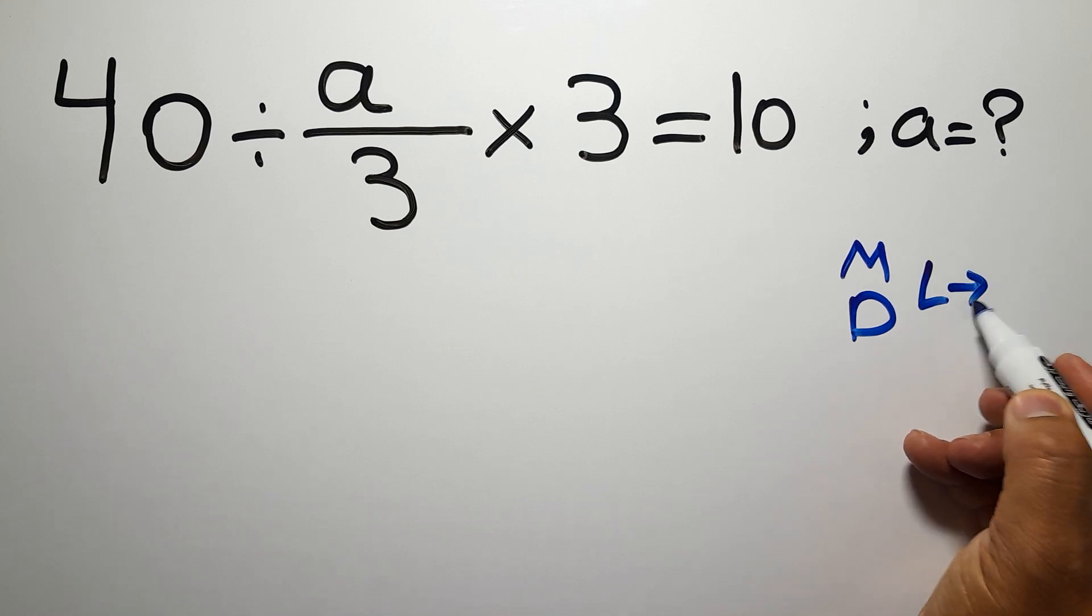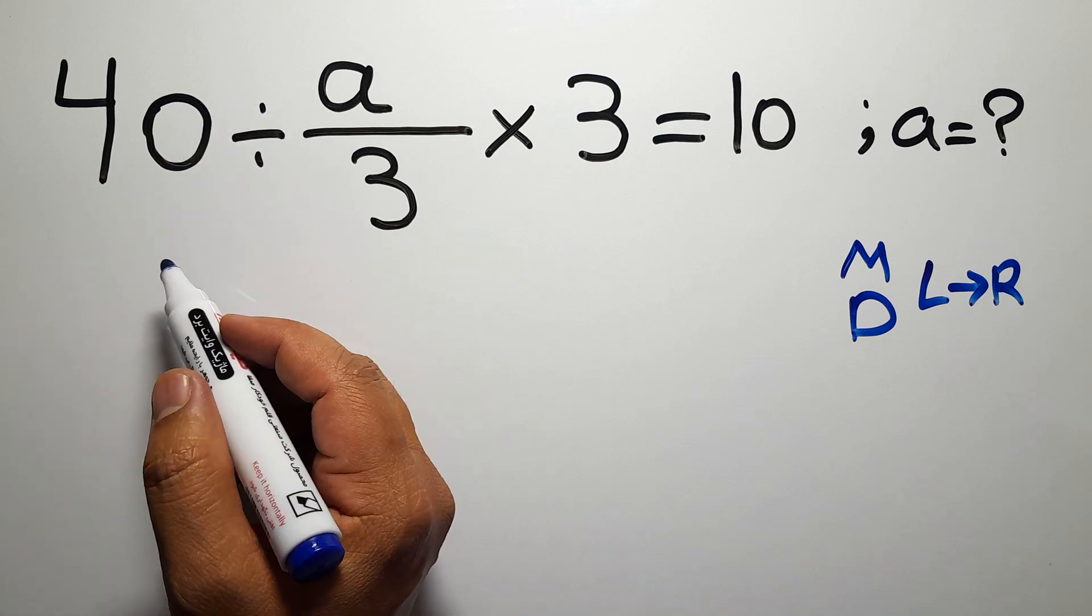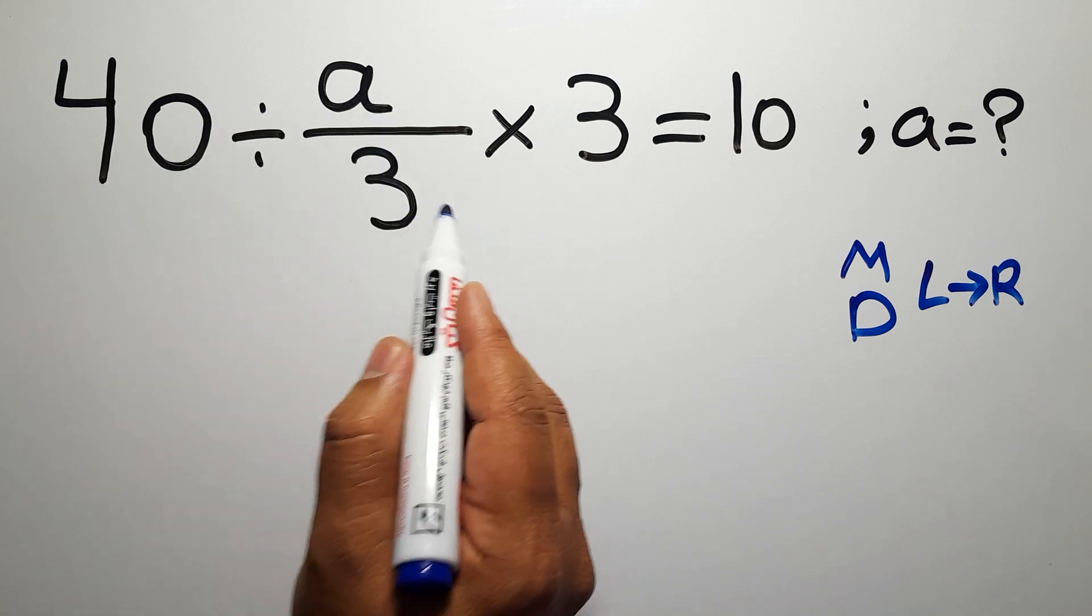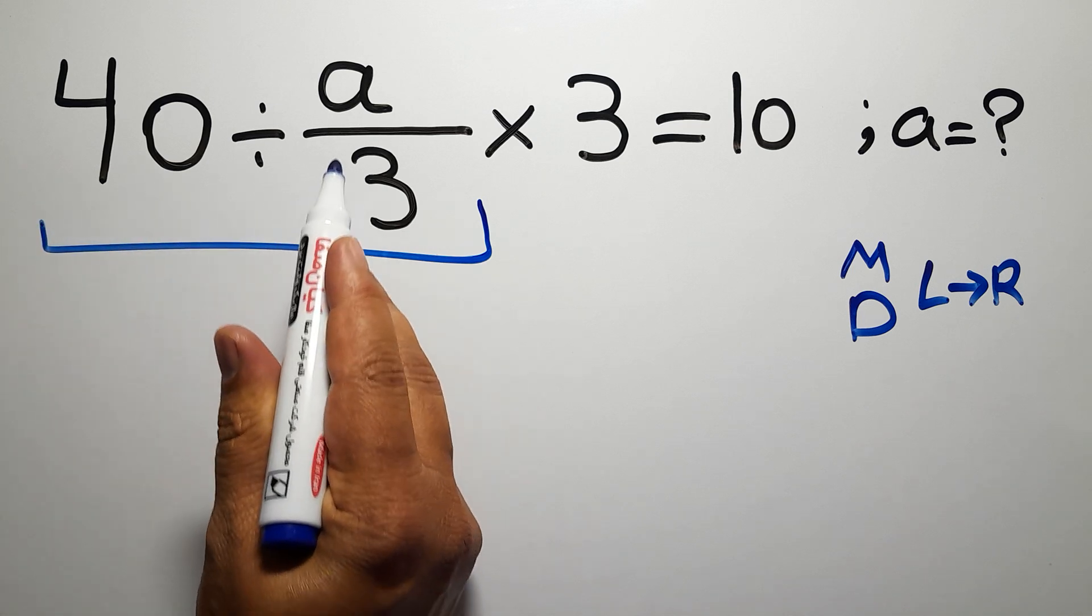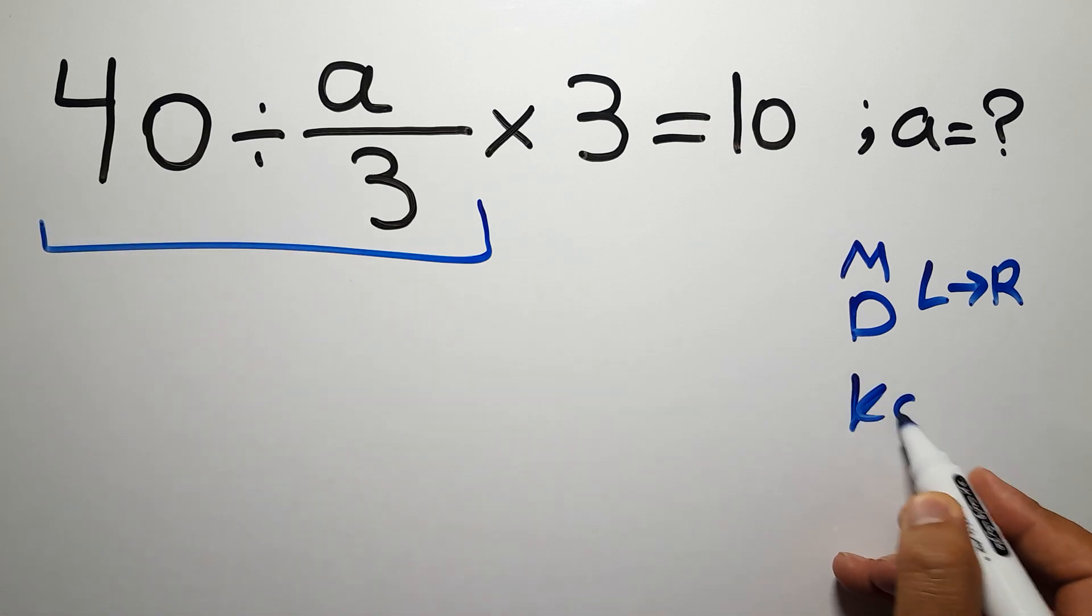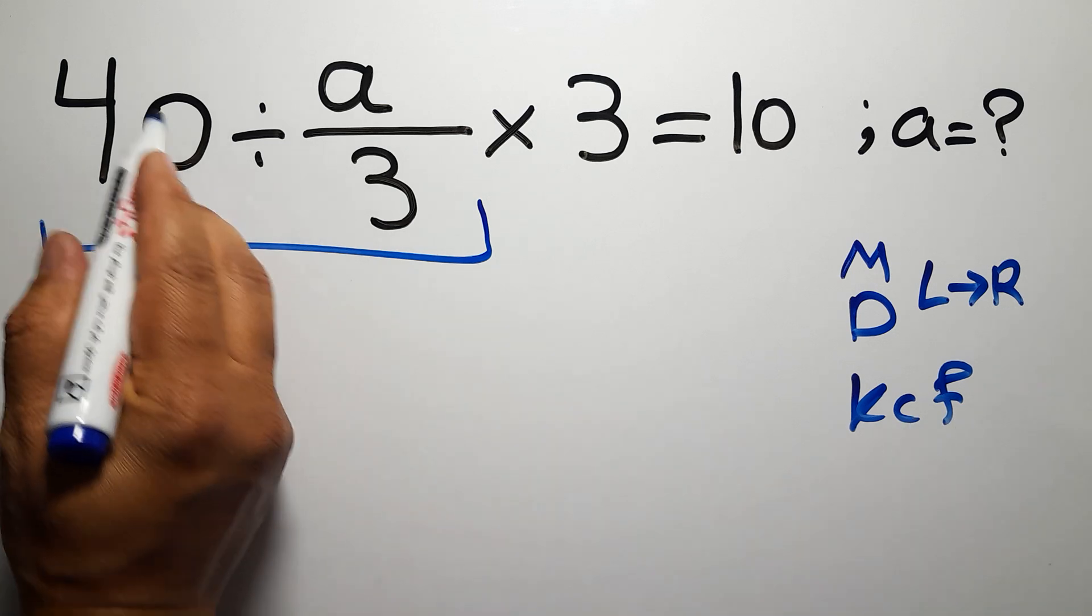So first, we do this division: 40 divided by a over 3. According to the KCF rule, K stands for keep, C stands for change, and F stands for flip. Keep the first fraction, change division to multiplication, and flip the second fraction.